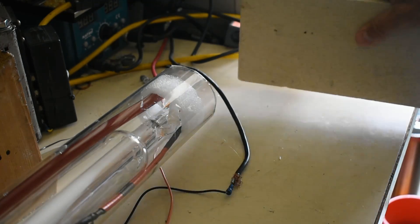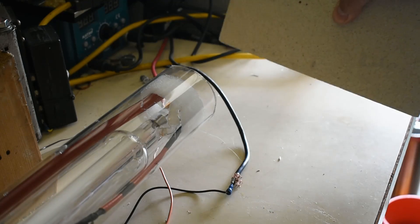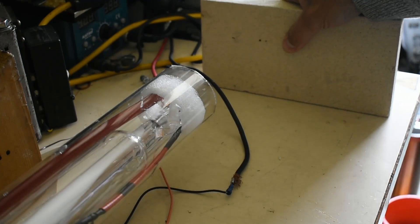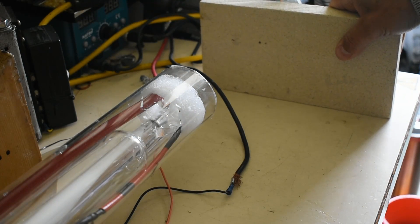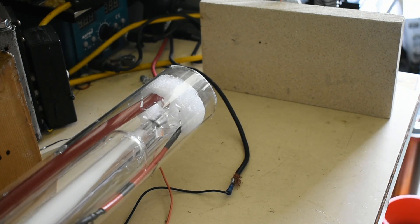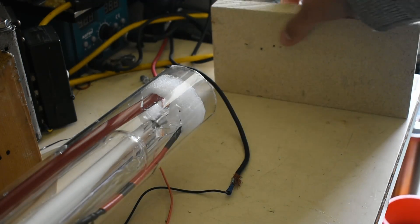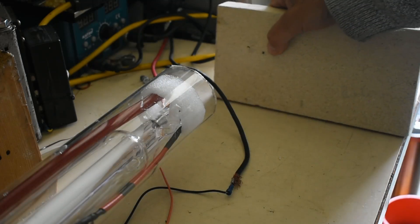This material is vermiculite. It's basically an asbestos type of material, although not as dangerous, but it can take heat no problem. If I fire the beam into that, it actually liquefies the vermiculite where you see it glowing afterwards.